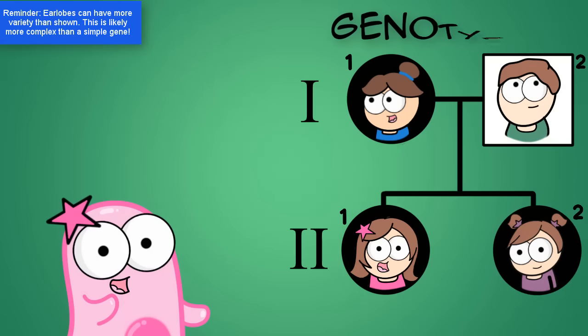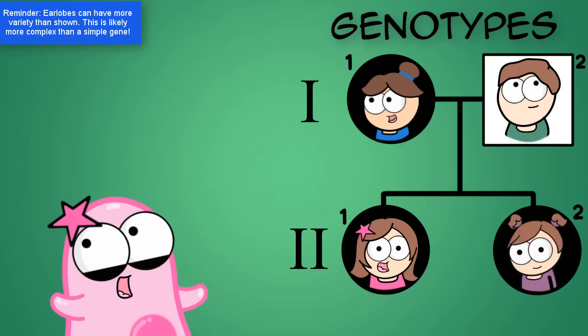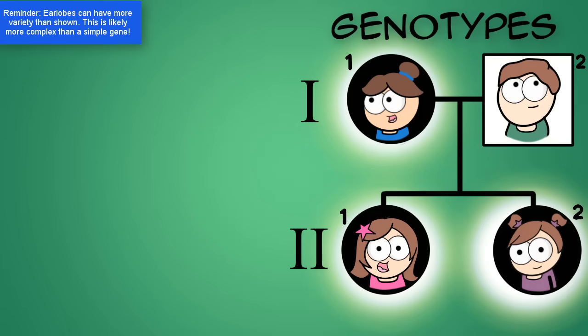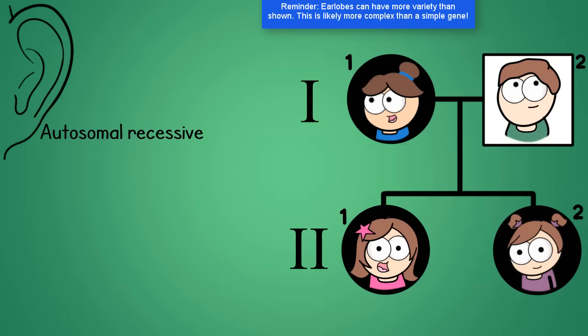If we were to put the genotypes next to each of these shapes, what would they be? The shaded ones would be easy because attached earlobes is the trait we're tracking and it's an autosomal recessive trait. So if we use the letter E, then these shaded shapes must be lowercase e, lowercase e.